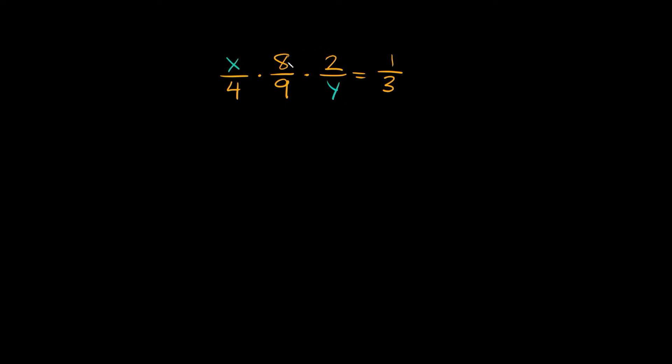So on top we have x times 8 times 2, which is equal to 16x. And then that's over the bottom, 4 times 9 is 36 and times y is 36y. So 36y and then we're saying that that's equal to one third.